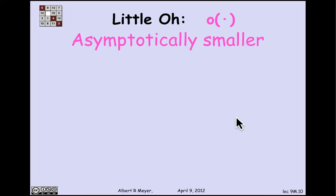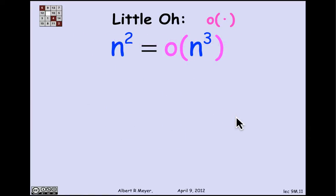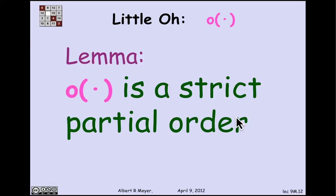The next asymptotic relation is called asymptotically smaller than, and the notation for it is this little o notation. You'd write that f(n) equals little o of g(n) if and only if the limit of f(n) over g(n) goes to 0 as n approaches infinity. Let's look at an example. n² is little o of n³ because trivially the limit of n²/n³ is the same as the limit of 1/n, which equals 0. By similar reasoning, it's not very hard to prove that little o defines a strict partial order on functions.